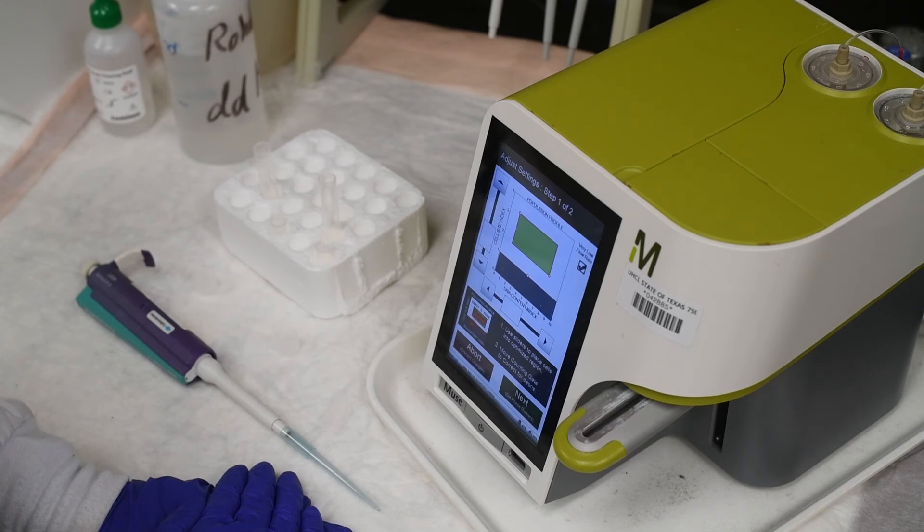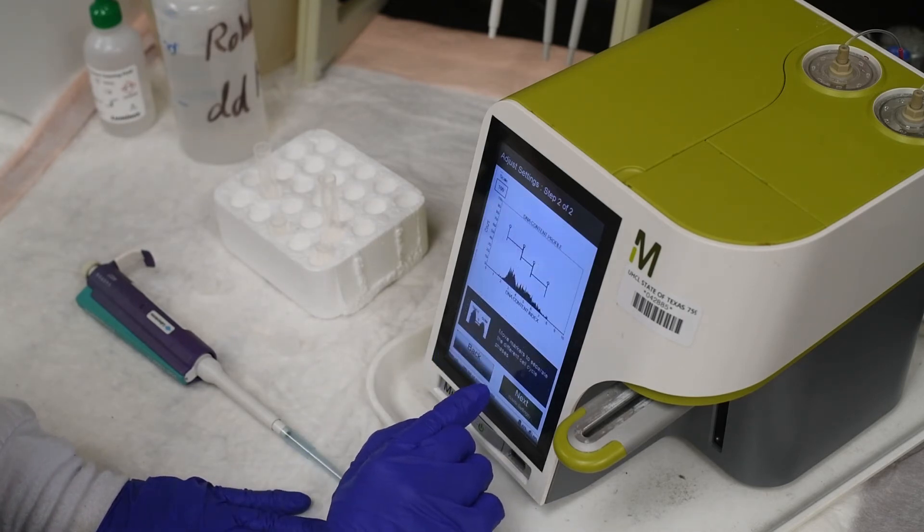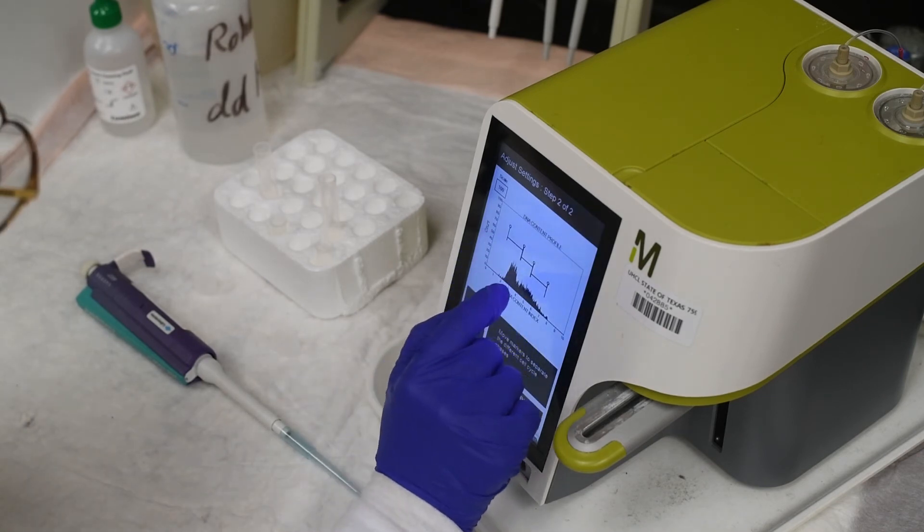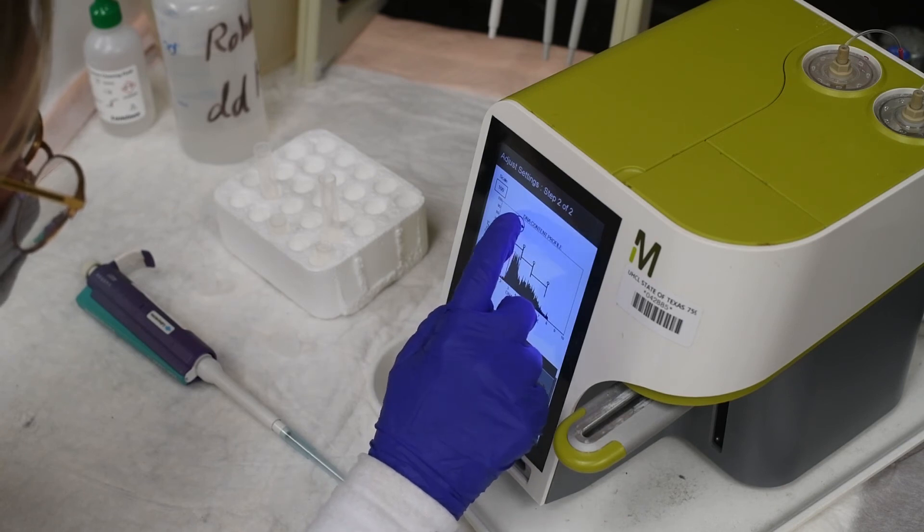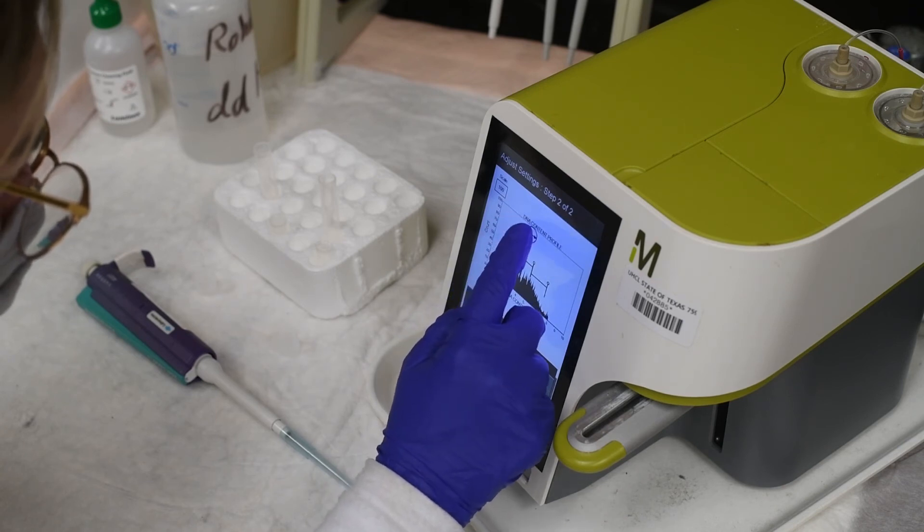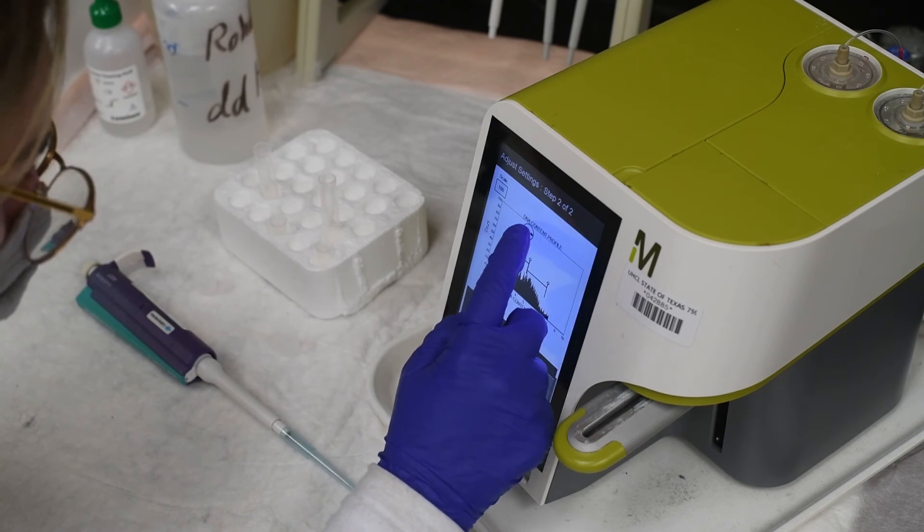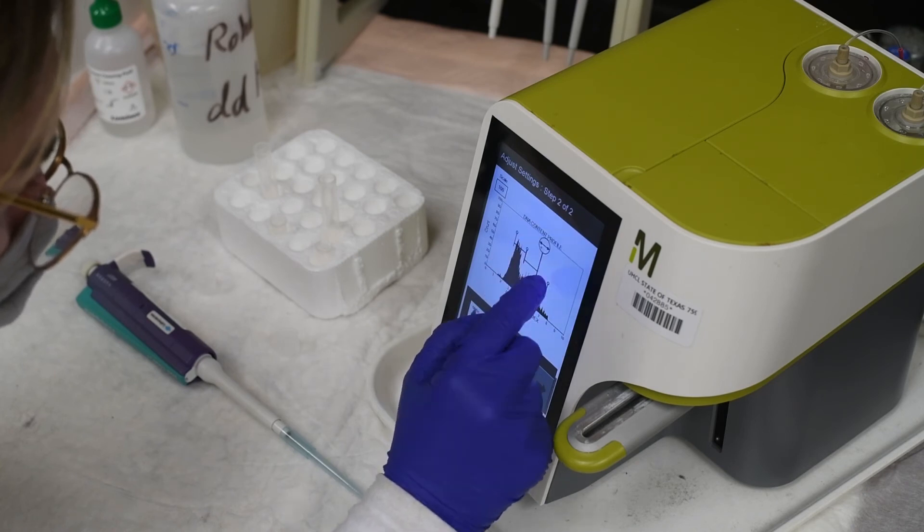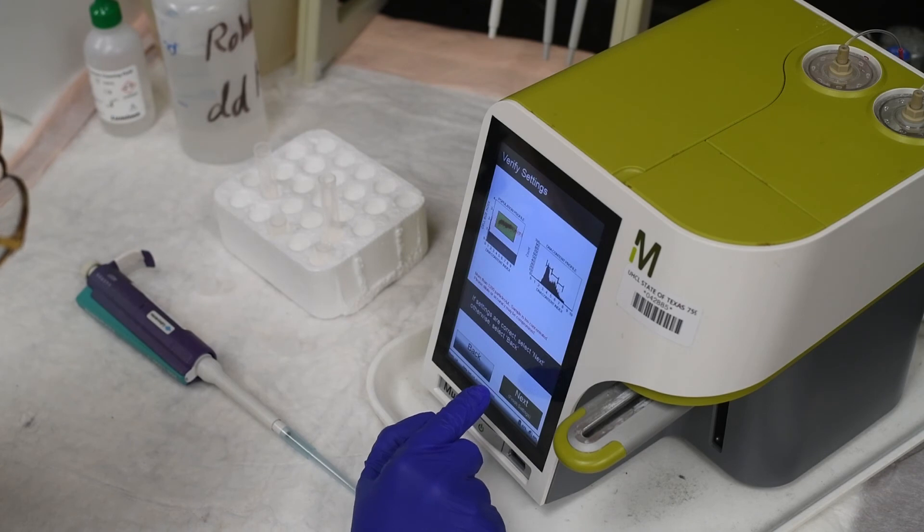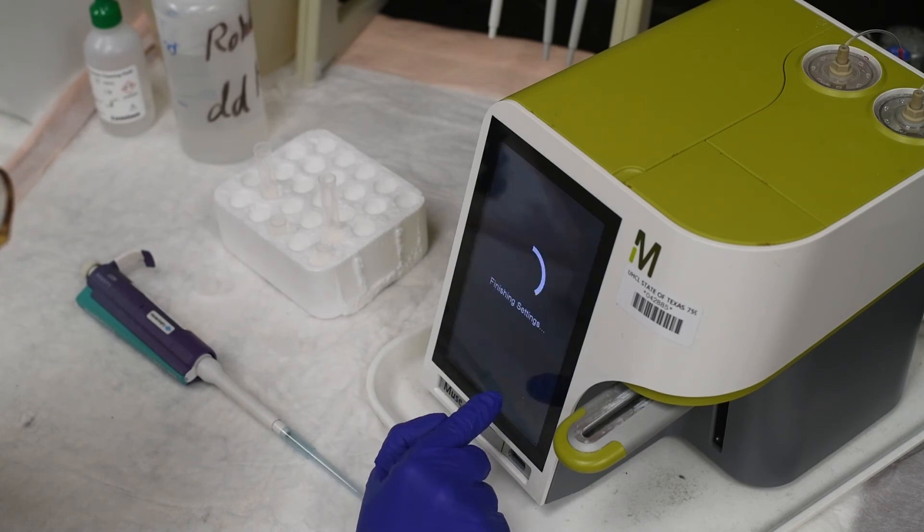Following the prompts on the Muse analyzer for running the assay under the cell cycle menu, I fine-tuned the settings for my DNA content index versus cell size index plot. Once those adjustments were completed, I fine-tuned the settings for the DNA content profile. I made each phase of the cell cycle around 1.5 tick marks wide. After completing both profiles, I verified and saved my settings.